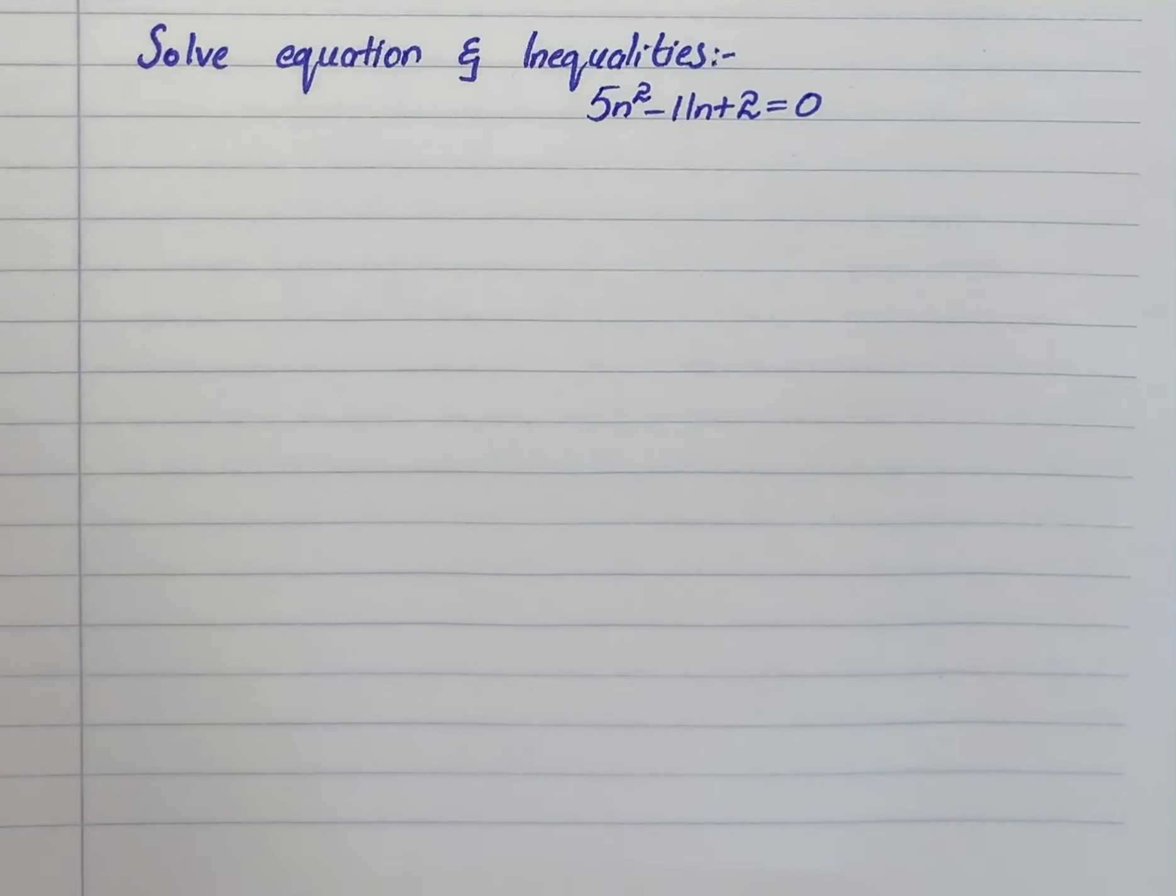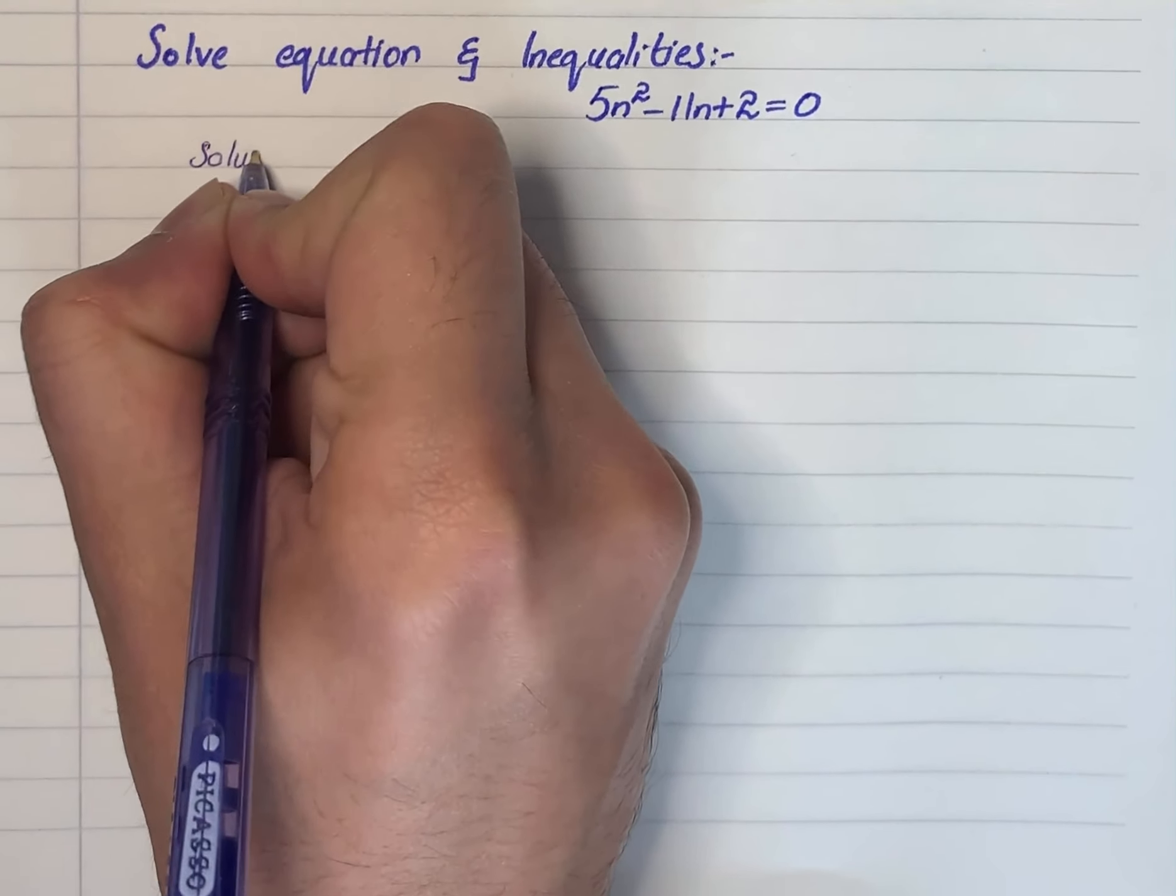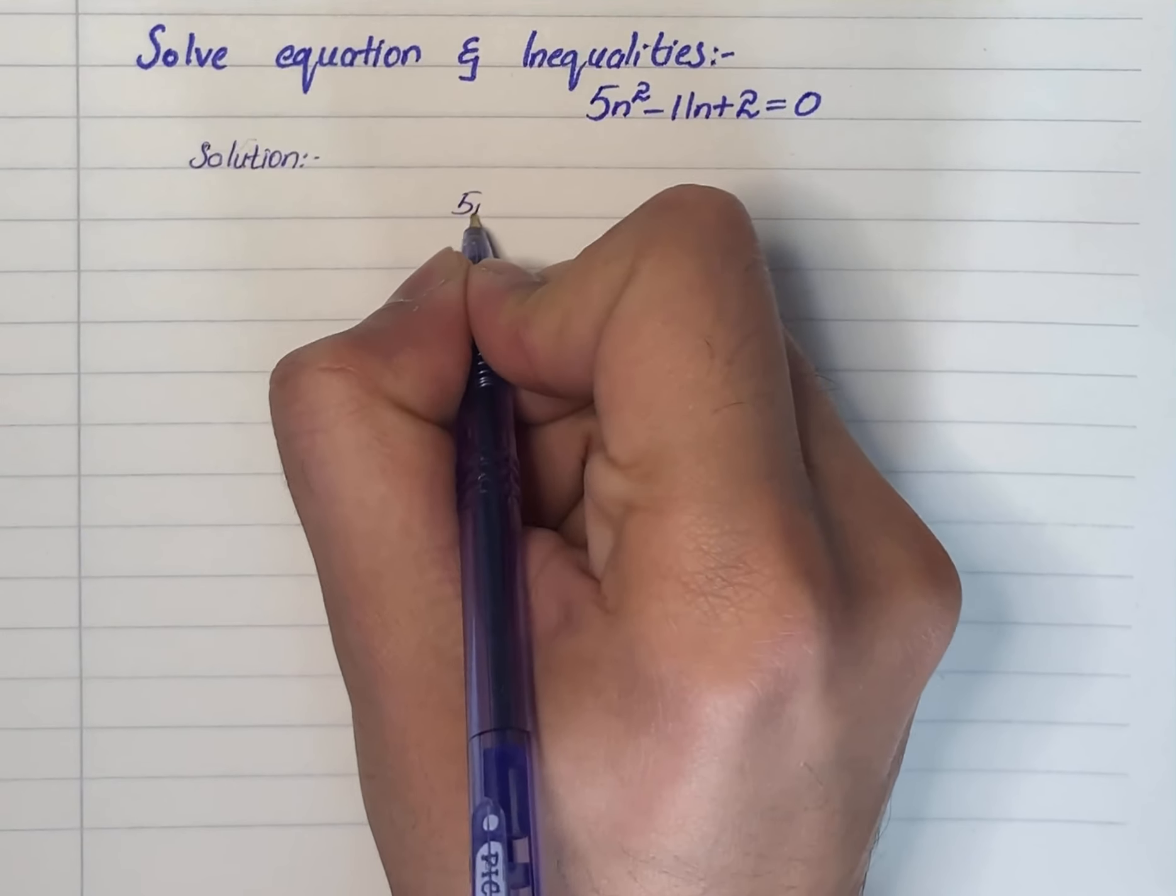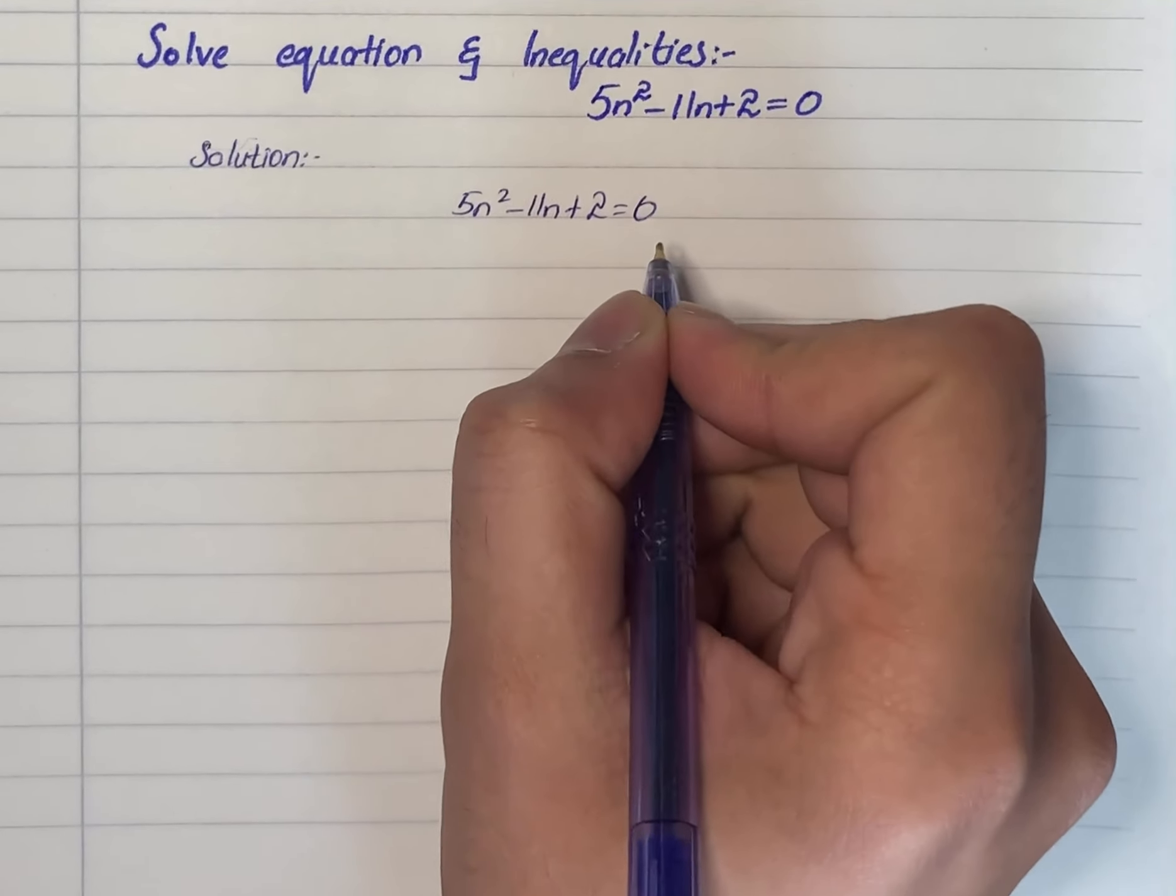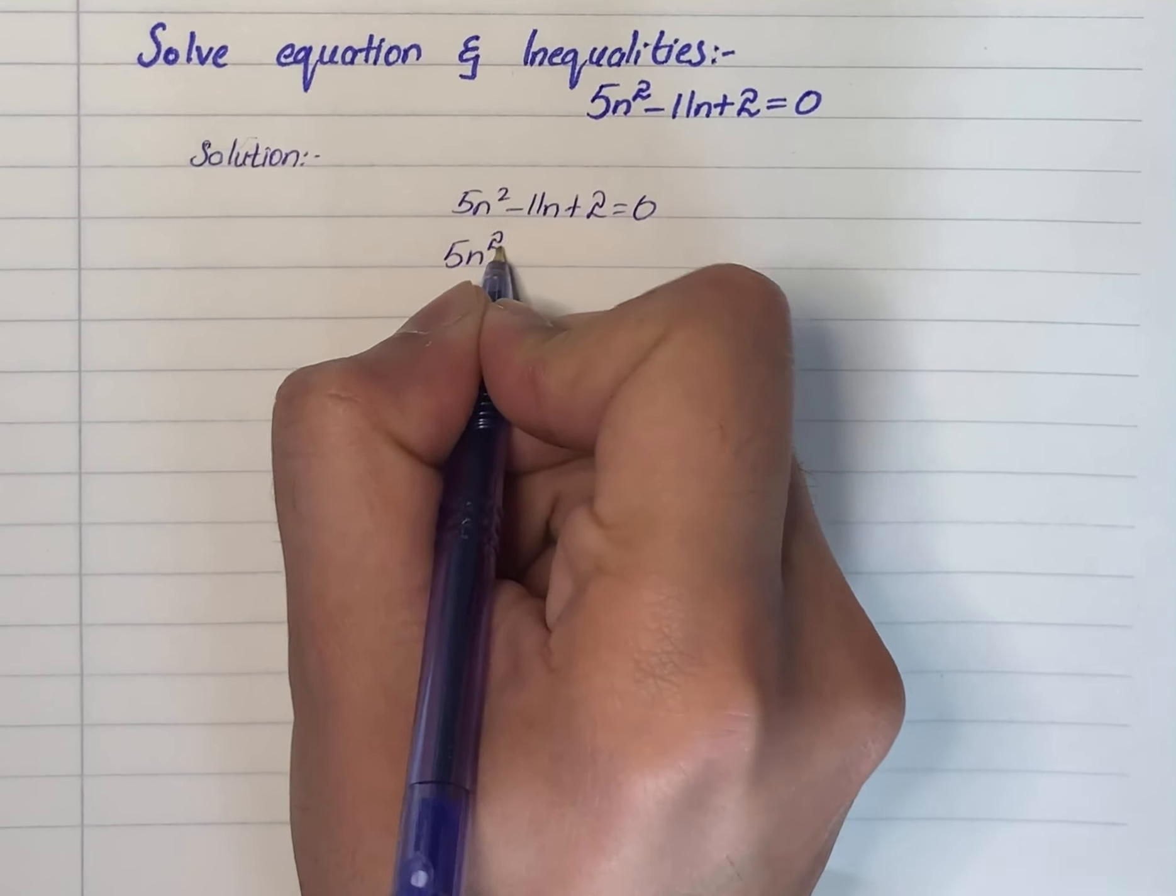We have an equation to solve: 5n² - 11n + 2 = 0. So let's solve it. 5n² - 11n + 2 = 0. First of all, we will make factors.